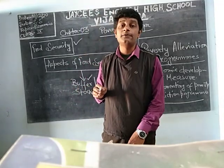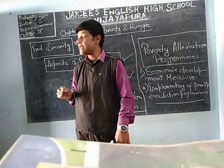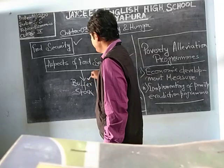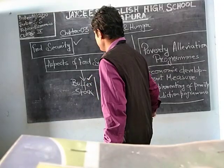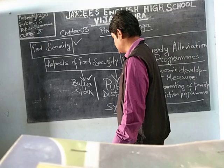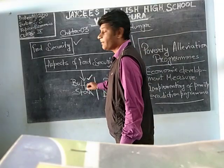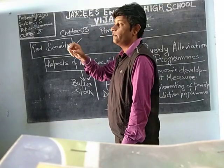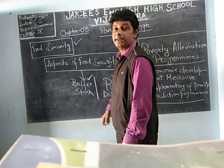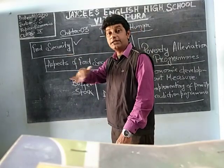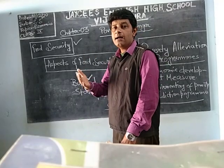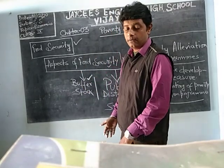What are the aspects of food security? We have learned about buffer stock and public distribution system, PDS. Buffer stock means making a stock of food grains from the farmers through FCI, and public distribution system means to distribute to the common people of India through the ration card.